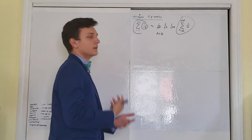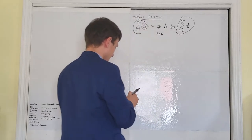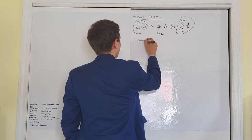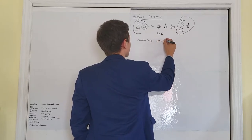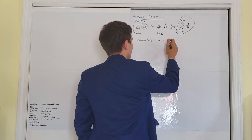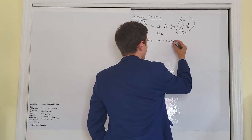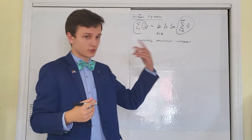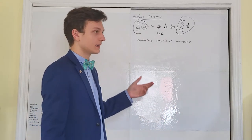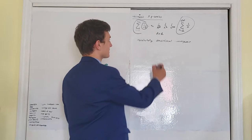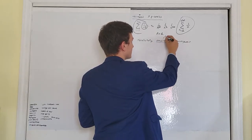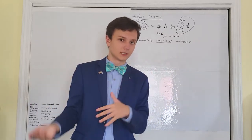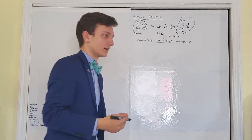Now let's cover the difference between absolutely convergent and conditionally convergent. A series can be convergent conditionally — meaning the condition is that it is an alternating series — or it can be convergent absolutely, meaning convergent with or without being an alternating series. The condition mentioned is the condition of it being an alternating series, having that (-1)^n term — or (-1)^(n+1) or (-1)^(n-1).